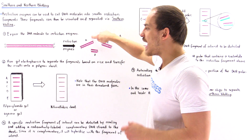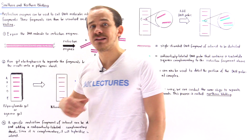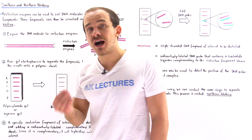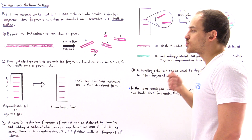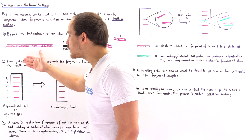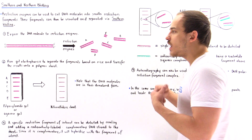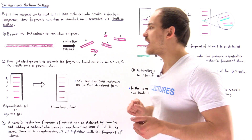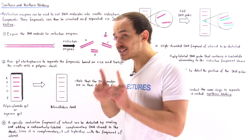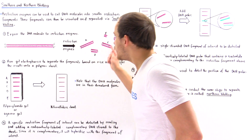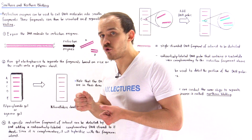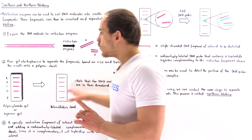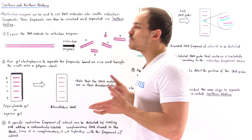The largest fragment, fragment A, will be found at the bottom because it does not experience a large resistive force. Once we separate the five fragments based on size, we transfer the result onto a special polymer sheet — usually a nitrocellulose polymer sheet — which we can use more effectively. It's important to note that within these regions the fragments are no longer double-stranded; they exist as single-stranded DNA molecules.